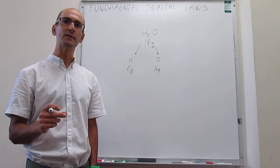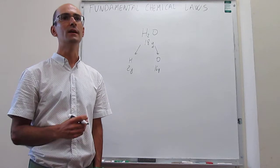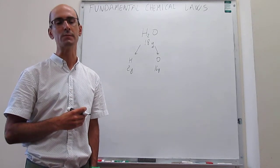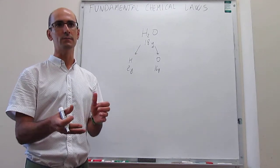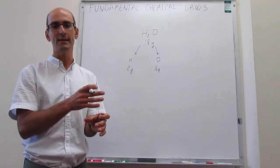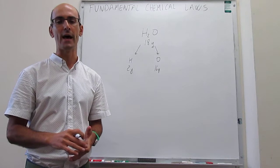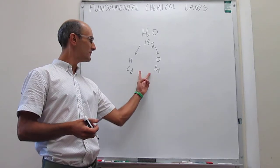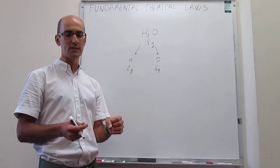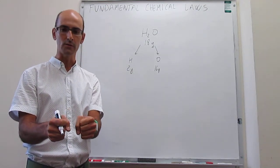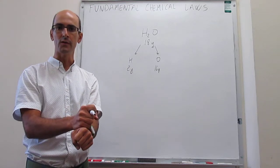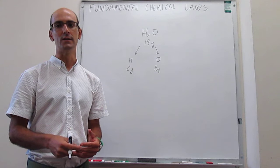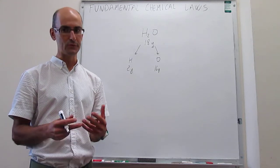This law was important because it made people start thinking that perhaps a way to explain this, a theory to explain this, was that elements are formed by tiny little particles which they call atoms, that are indivisible. The idea that you always have these mass combinations is because those atoms, those individual tiny little particles, always combine with each other in the same way. That would be a way to explain this law of definite proportions.